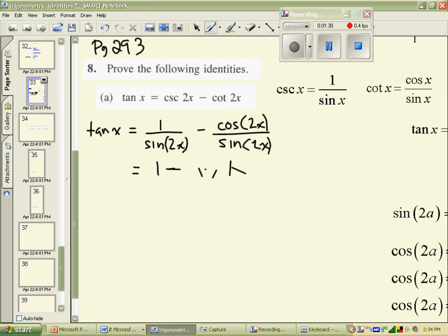We have 1 minus cos 2x divided by sine of 2x. And I have tan of x on the left-hand side, and that will continue to be that way for quite some time.